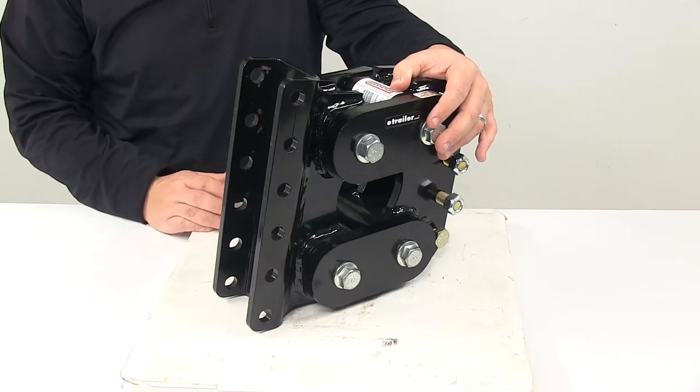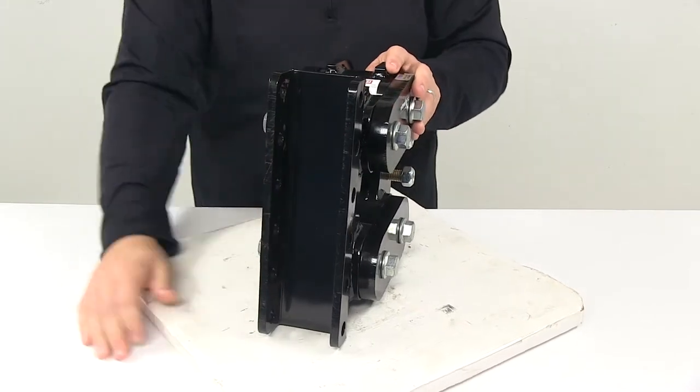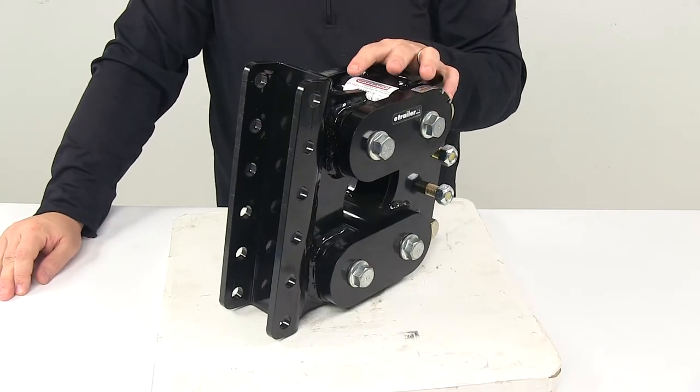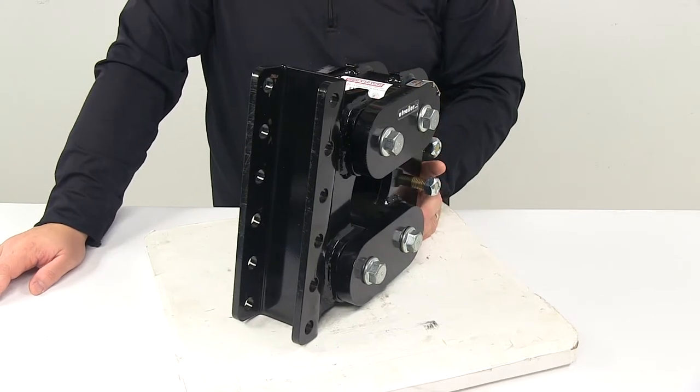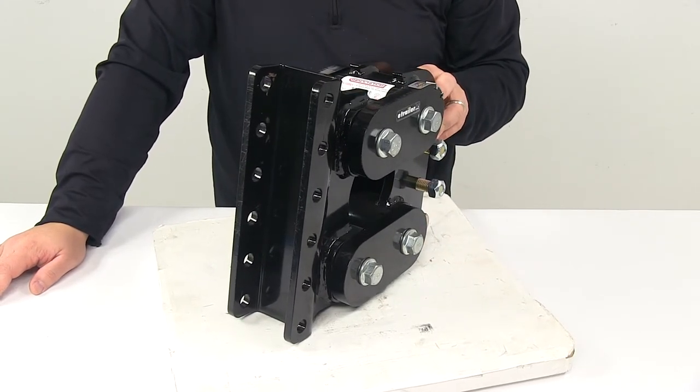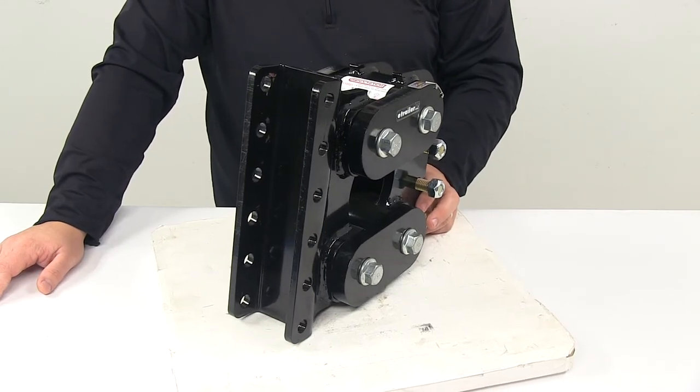The range of height adjustment is 8 inches. Inside channel width is 3 inches, and the maximum gross trailer weight capacity for this unit is 16,000 pounds. Maximum tongue weight capacity is 1,700 pounds, and the optimal ride tongue weight is between 1,000 and 1,700 pounds.